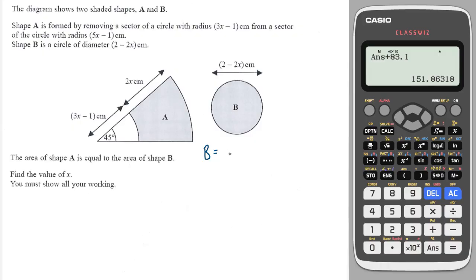The circle is π times by the radius squared, and the radius is half of the diameter, so divide that by 2 gives me 1 minus x, and that needs to be squared. Okay, now let's look at the area of A.